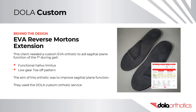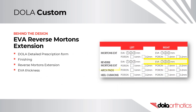Behind the Design – EVA Reverse Morton's Extension. This client needed a custom EVA orthotic to aid sagittal plane function of the first during gait. The patient showed signs of functional hallux limitus and a low gear toe-off pattern. The aim was to improve sagittal plane function. They used the Dollar Custom Orthotic Service and selected the EVA thickness required for the reverse Morton's extension in the finishing section of the Dollar detailed prescription form.